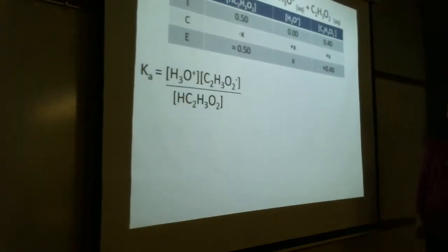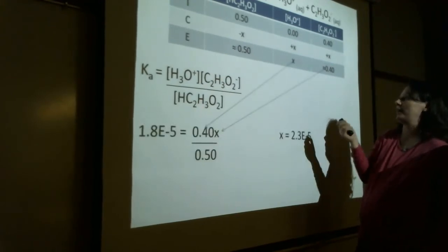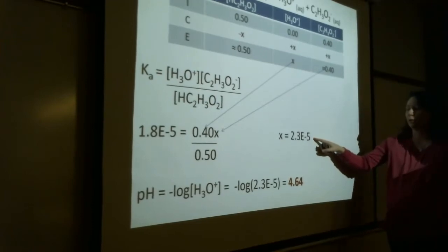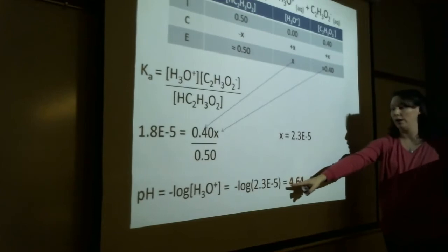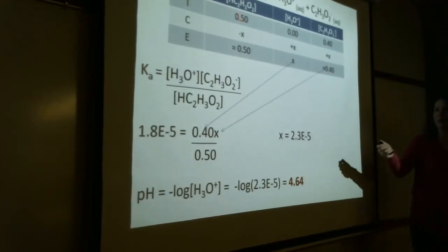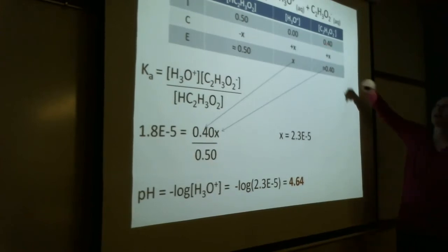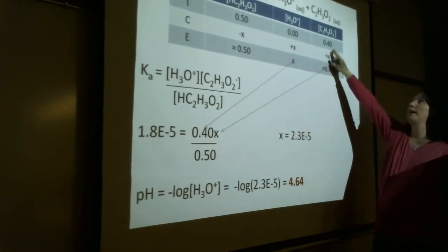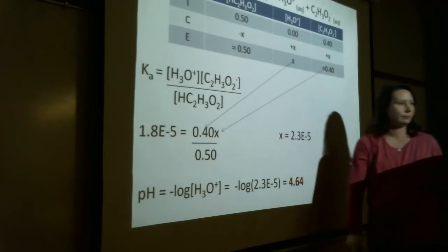We make the 5% approximation twice because Ka = 1.8×10⁻⁵ means x is very small. Write the Ka expression: Ka = [H₃O⁺][A⁻]/[HA]. Plug in: x goes in for H₃O⁺, 0.4 for acetate, and 0.5 for acetic acid. We get x = 2.3×10⁻⁵. pH = -log(x) = 4.64. Two sig figs means two decimal places. No square root this time because the numerator is 0.4x, not x².